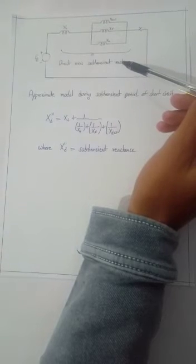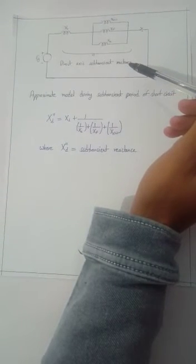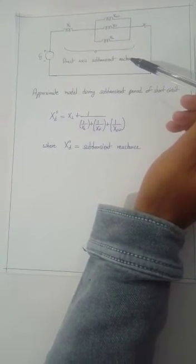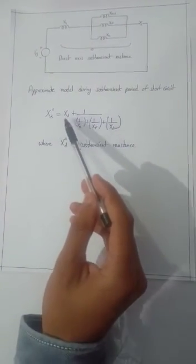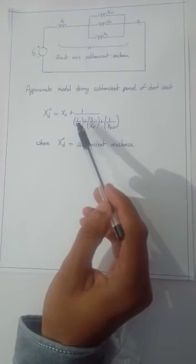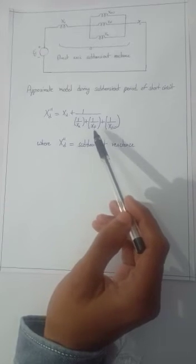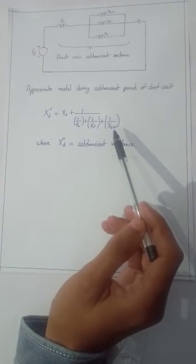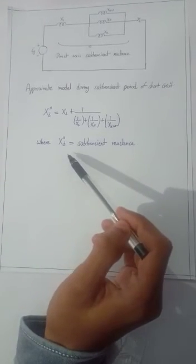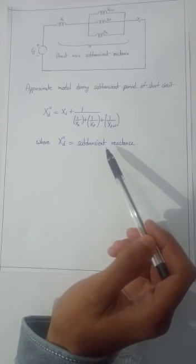We can say that the total reactance in the circuit is the direct axis Subtransient reactance where XD double dash is equal to XL plus 1 by 1 by XA plus 1 by XF plus 1 by XDW, where XD double dash is equal to Subtransient reactance. Thank you.